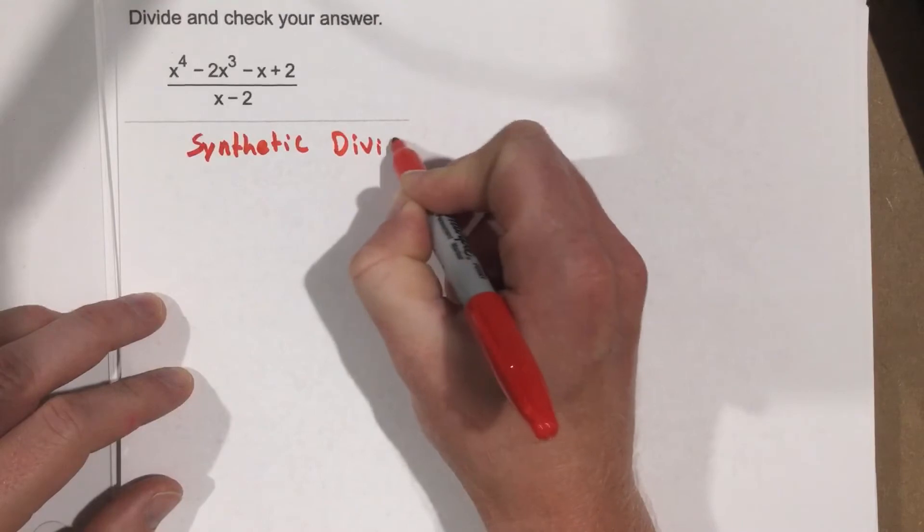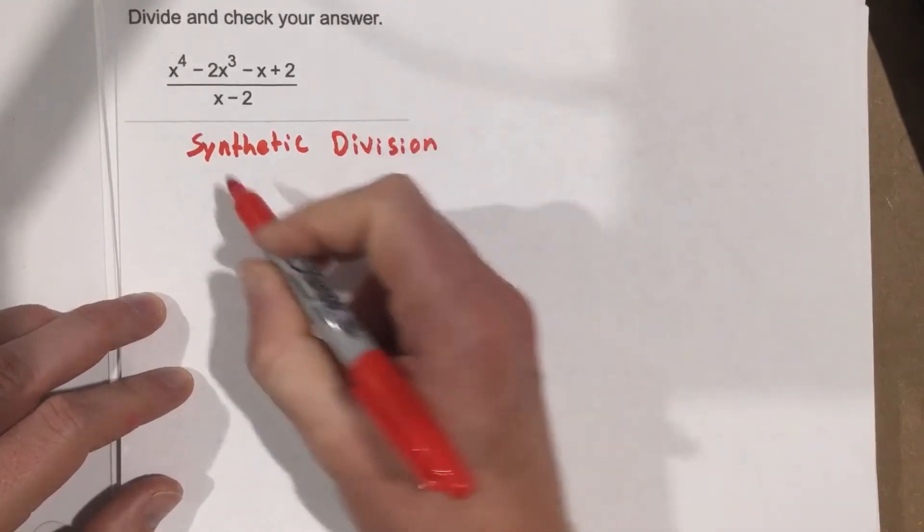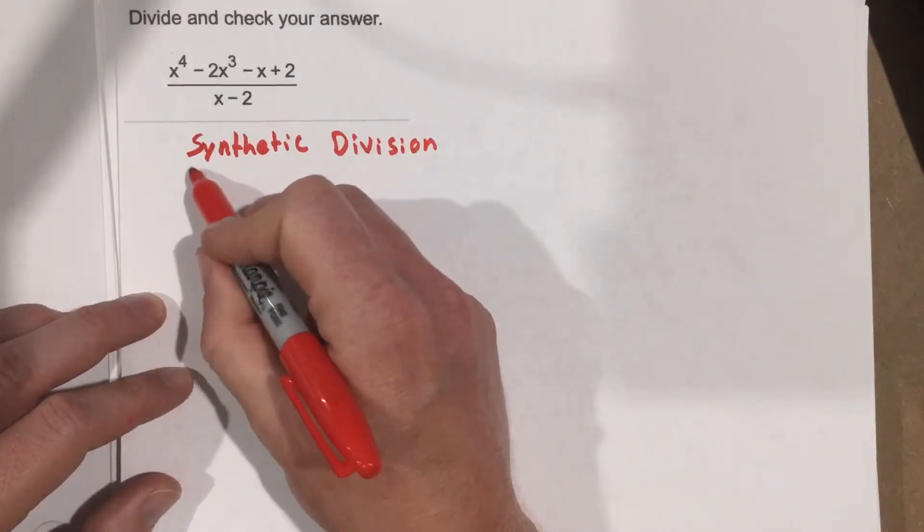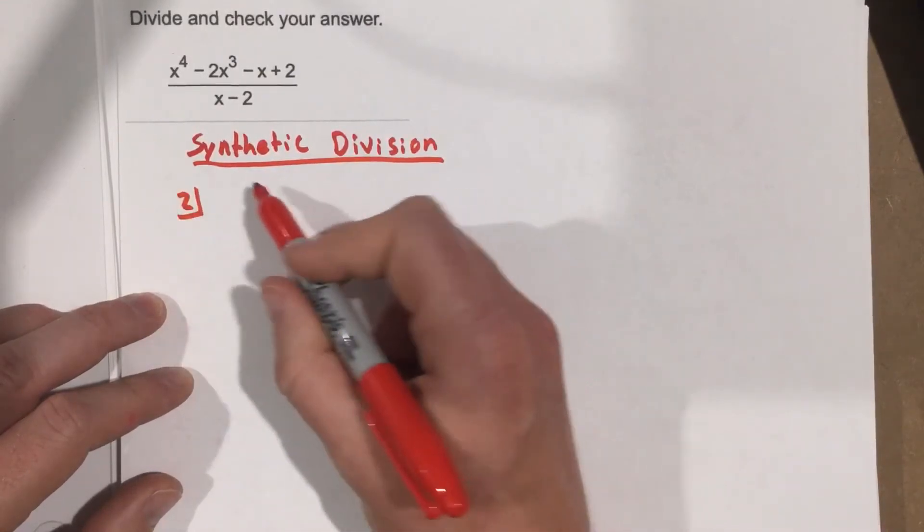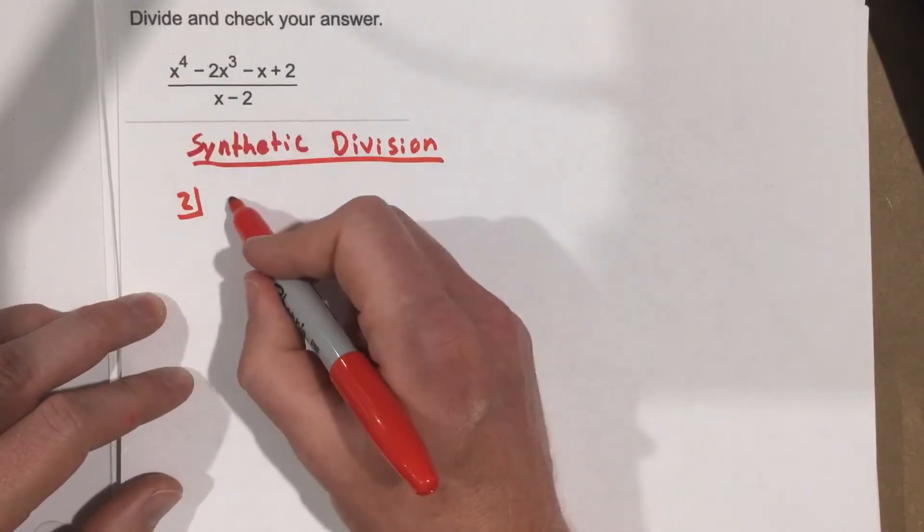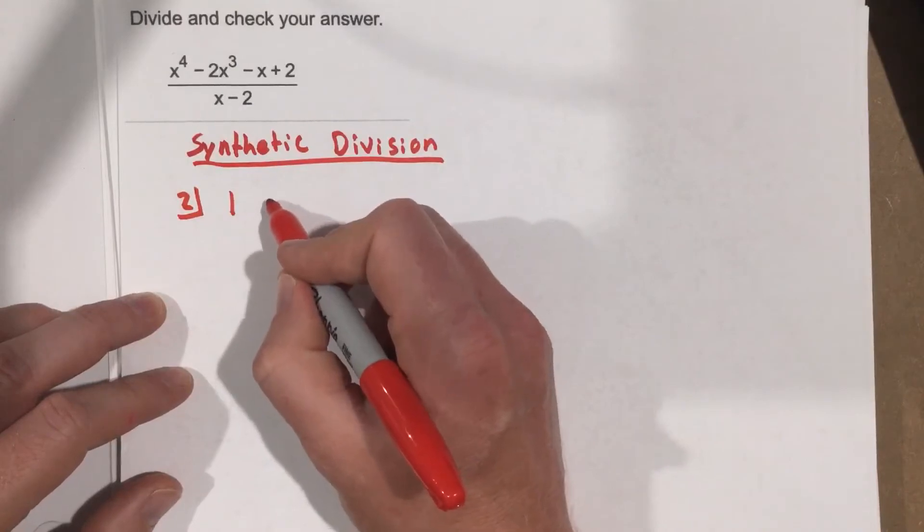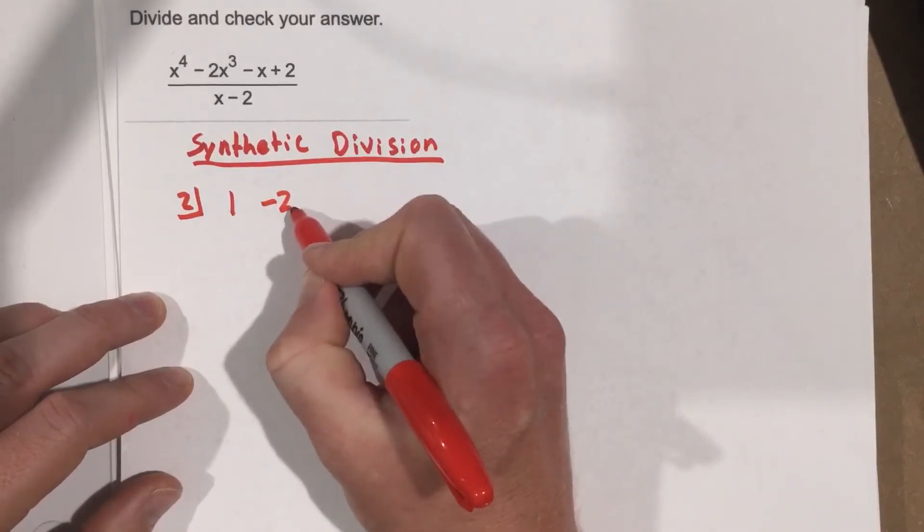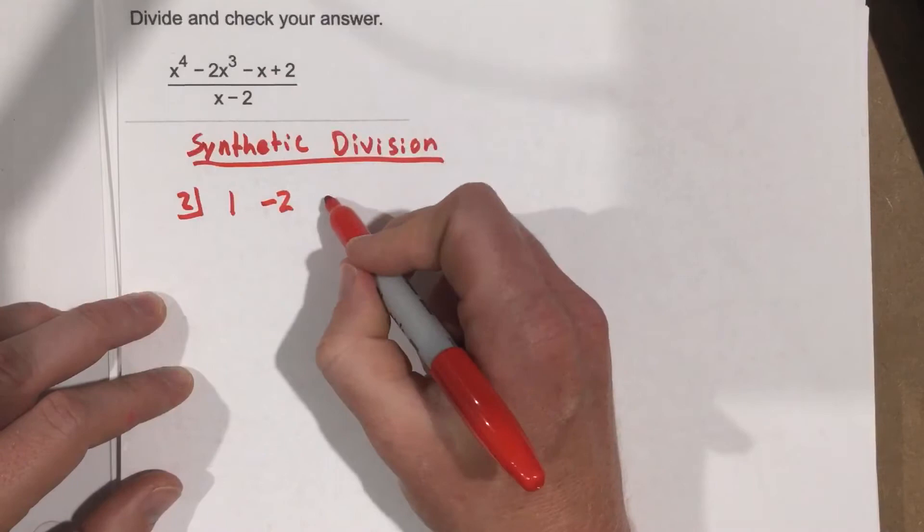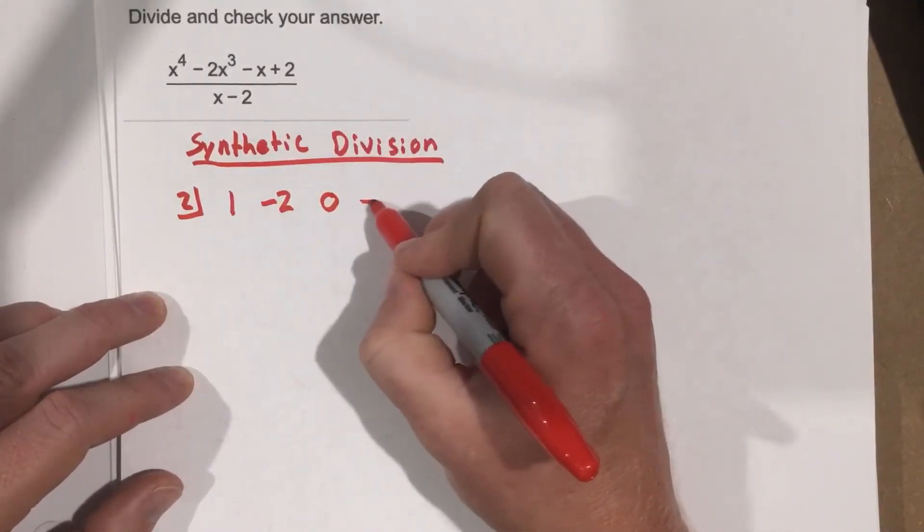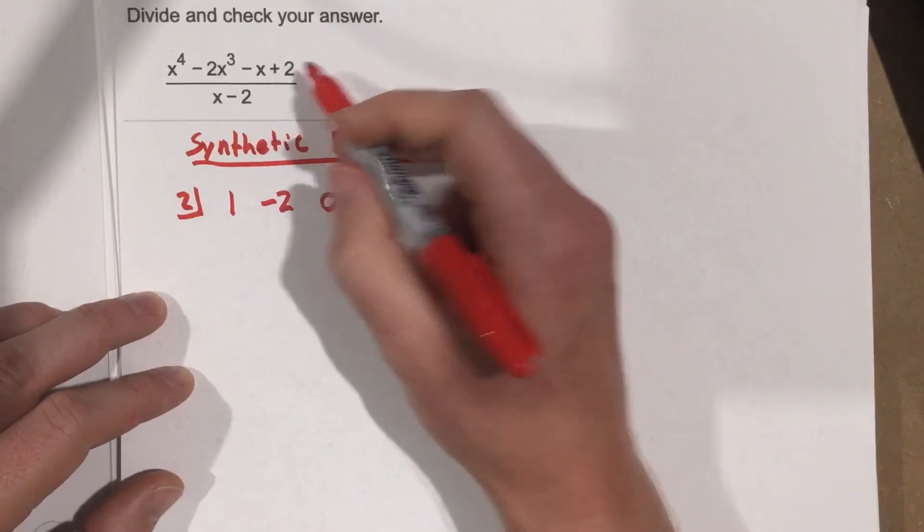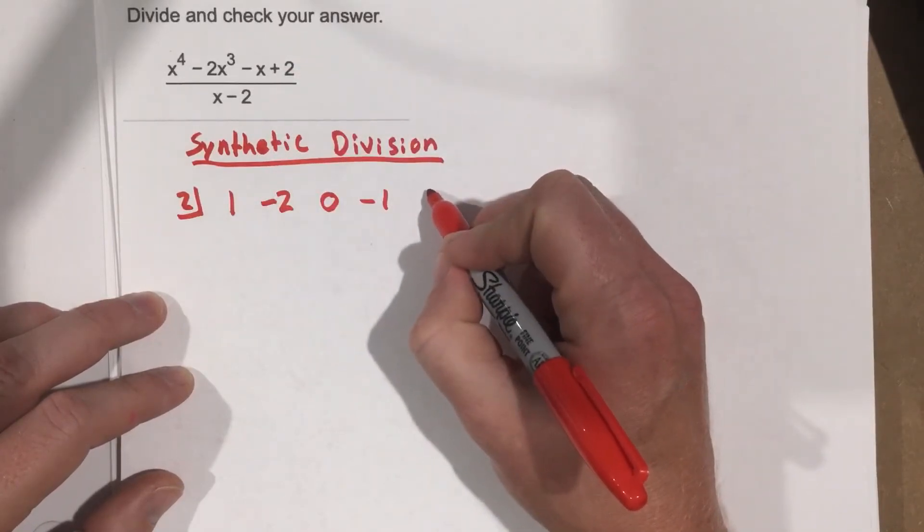Now we have to watch out with our synthetic division when we do this because in this problem, our leading coefficients are 1 for the x to the 4th term, negative 2 for the x cubed term, and then we skip the x squared term, so I've got to put a 0 in for the x squared term, and then negative 1 for the x term, and then put in a 2 for the constant term.